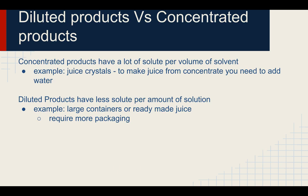Diluted products versus concentrated products: concentrated products have a lot more solute per volume of solvent. For example, juice crystals — you have juice crystals in a package, and to make juice from the concentrate, you need to add water. Diluted products have less solute per amount of solution. For example, large containers of ready-made juice — like orange juice you buy in the store — already have the water mixed in, but they require a lot more packaging, so there's much more waste.